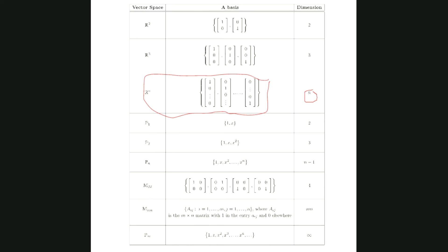For Pn, the standard basis is {1, x, x², ..., x^n}. You can count them — there are n+1 vectors. So no matter what n is, when you take the vector space Pn, you know a basis and you know the dimension is n+1. Similarly for the vector space of matrices M_{2×2}, there is a standard basis, and for M_{m×n} the dimension is mn.